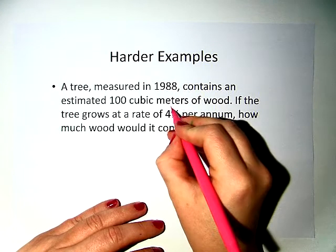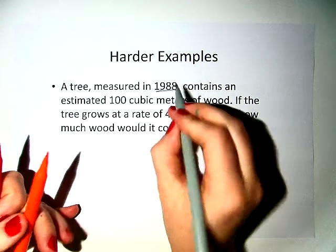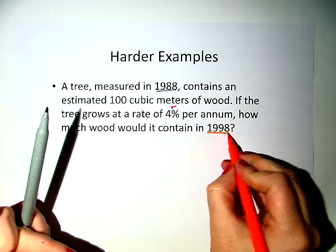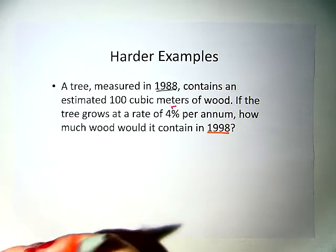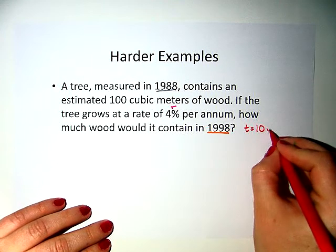okay, we finally have a rate. How much wood would it contain in 1998? Okay, so our time is calculated from two different years. We start off in 1988 and end in 1998. So we have to subtract the two of them, and we get that our time is 10 years.